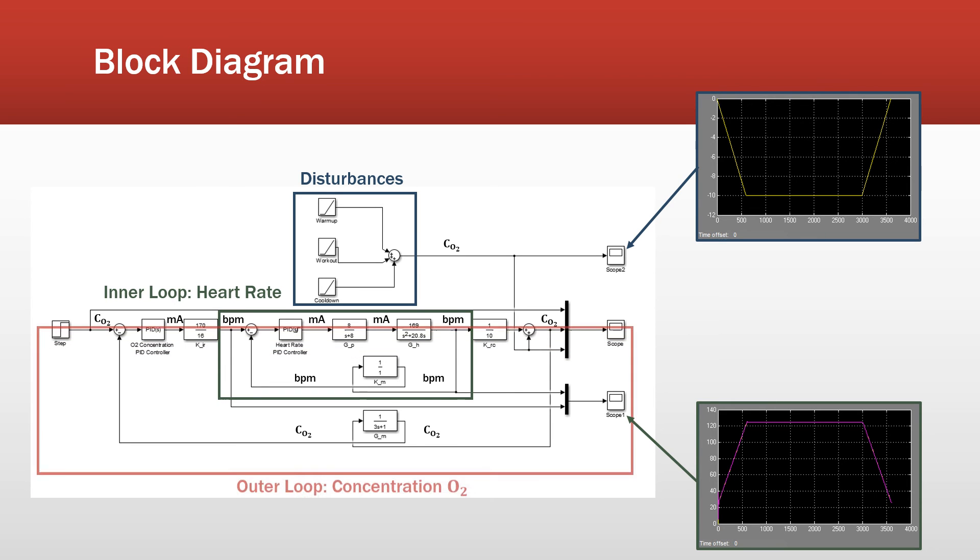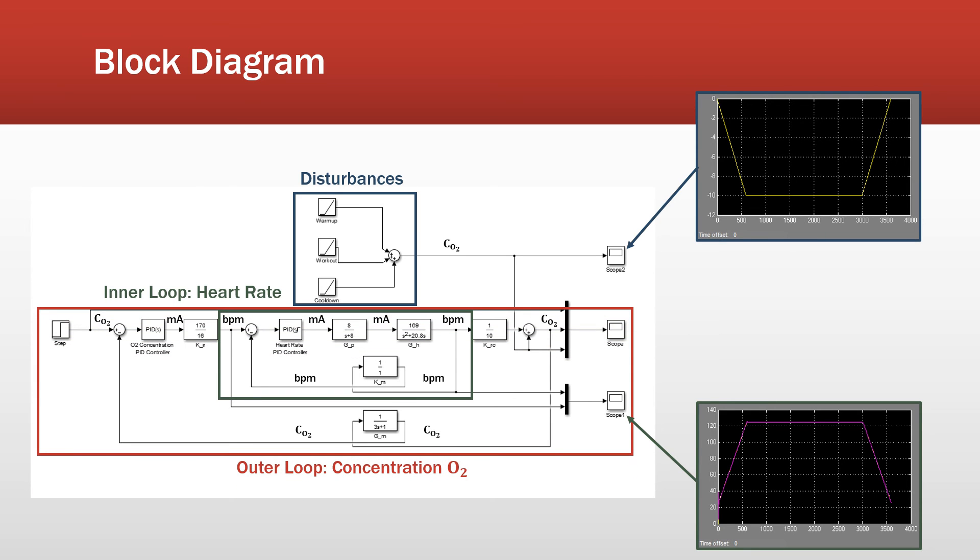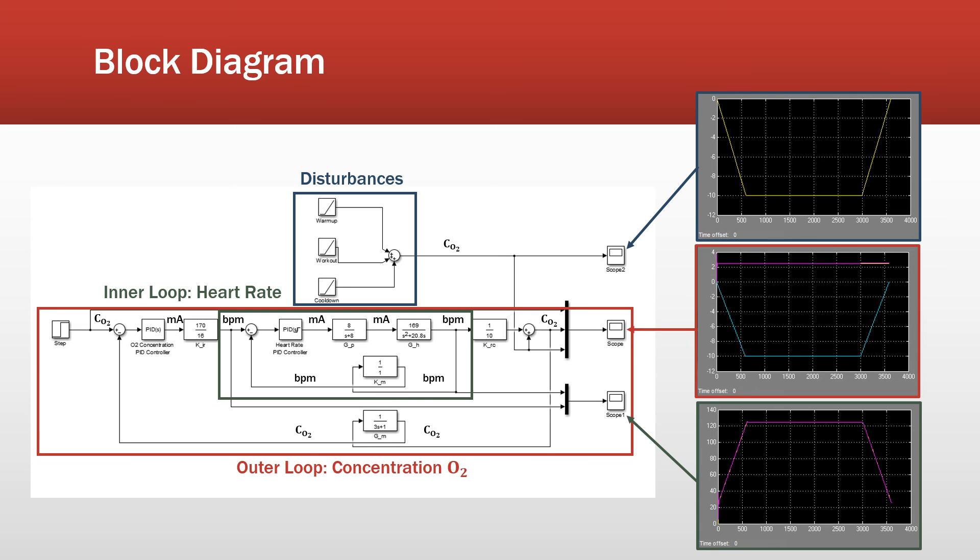And finally, the focus of our project was on this outer loop, the concentration of O2. So looking at it, on the left is our set point. And then as we go through, you have the PI controller, and then a few transfer functions that go between our units of milliamps to beats per minute and so forth. And the value that we saw in Simulink is here.